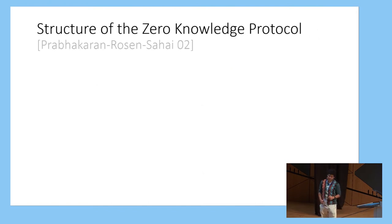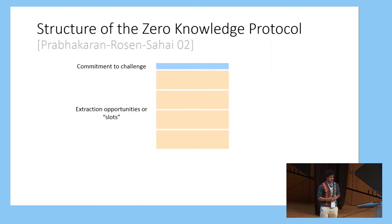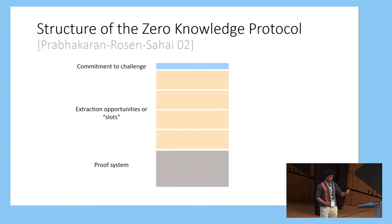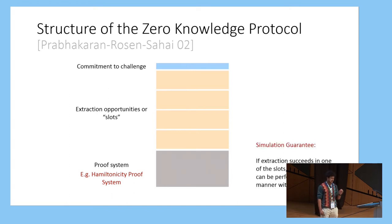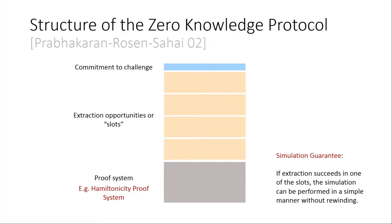If all parties are blockchain active, we show positive results. The structure of the zero-knowledge protocol follows the preamble approach from Prabhakar and Rosenzweig, with three stages: the verifier committing to a challenge, extraction opportunities or slots to enable the simulator to extract the verifier's committed challenge, and finally the proof system — concretely something like the Hamiltonicity proof system. This structure is useful because if you extract the challenge in even one slot, the rest of the protocol can be simulated in a straight-line manner with no more rewinding.